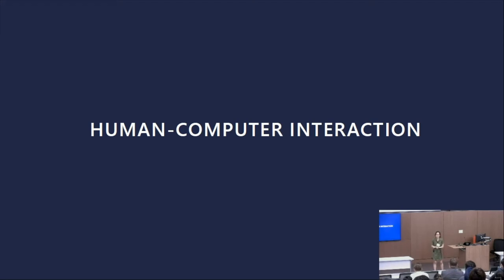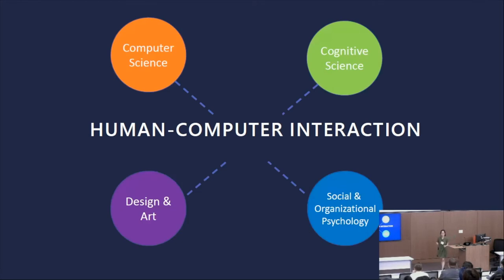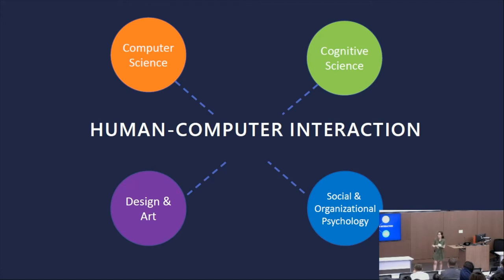The goal of human-computer interaction is not just to make technology work, but to provide a great user experience for people — so the emphasis is on the people. Human-computer interaction is a multidisciplinary field of study that spans across multiple fields including computer science, cognitive science, design and art, and also social and organizational psychology.